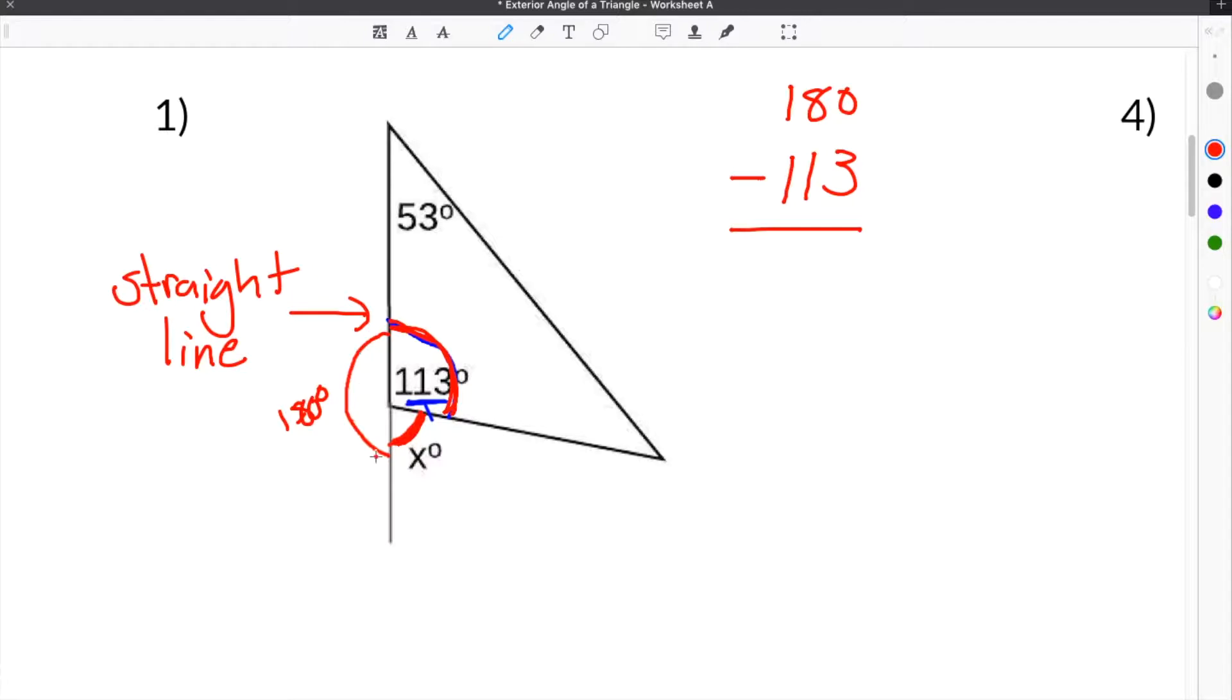We know the entire thing from here to here has to be 180 degrees. From here to here is 113, you just subtract that from 180. In the case of this problem, you will be left with 67 degrees. So we know that x has to be equal to 67 degrees, because 113 plus 67 is 180, or one full line which is 180 degrees.